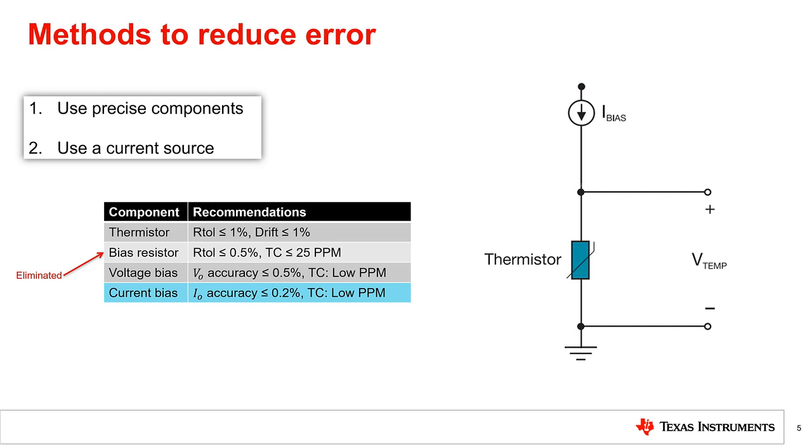Often times, designers will add a network of resistors to linearize the voltage output of an NTC thermistor circuit. Rather than adding resistors, it is recommended to use a linear PTC thermistor, which inherently has the desired linear voltage drop across temperature and does not need any of those linearization resistors.